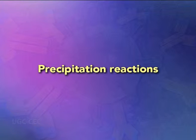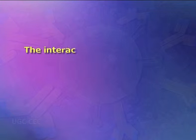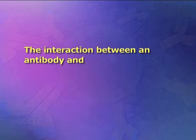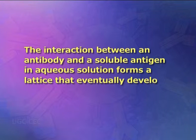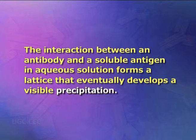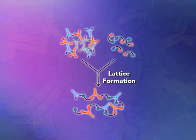We will be talking about precipitation reactions. The interaction between an antibody and a soluble antigen in aqueous solution forms a lattice that eventually develops a visible precipitation. Antibody that forms precipitation is known as precipitine. This process is called a precipitation reaction.